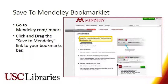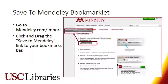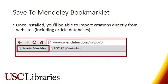How to get the Save to Mendeley bookmarklet. Go to Mendeley.com/import. Click and drag the Save to Mendeley link to your bookmarks bar. Once installed, you'll use this bookmarklet to import citations directly from websites, including article databases.